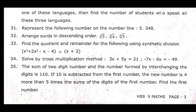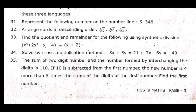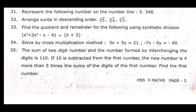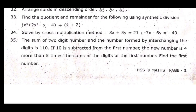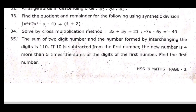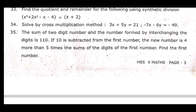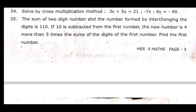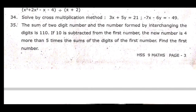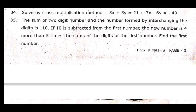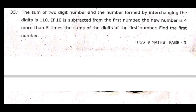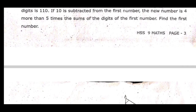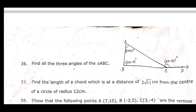31st: Represent the following number on the number line — 5.348. 32nd: Arrange in descending order — 3 root of 5, 9 root of 4, 6 root of 3. 33rd: Find the quotient and remainder using synthetic division — (x³ plus 2x² minus x minus 4) divided by (x plus 2). 34th: Solve by cross multiplication method — 3x plus 5y equal to 2 and minus 7x minus 6y equal to minus 49. 35th: The sum of a two-digit number and the number formed by interchanging the digits is 110. If 10 is subtracted from the first number, the new number is 4 more than 5 times the sum of the digits of the first number. Find the first number.